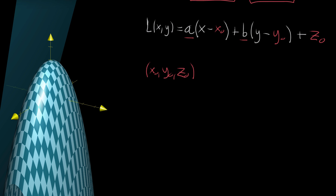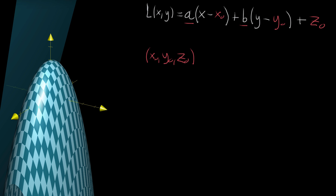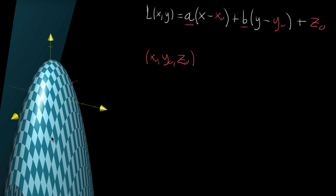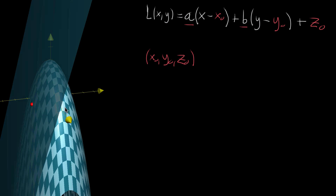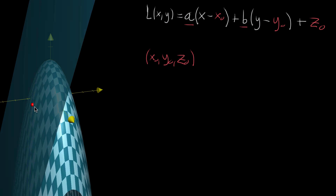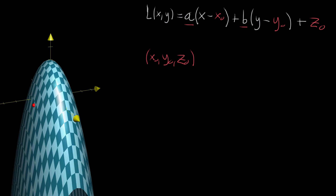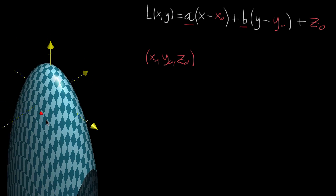With that said, let's start thinking about how you can find the tangent plane to a graph, and first let's think about what that point is — how you specify such a point.